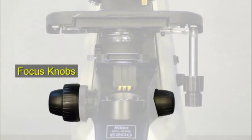Image focus is accomplished by focus knobs on either side of the microscope. These move the stage up and down to focus the specimen image.